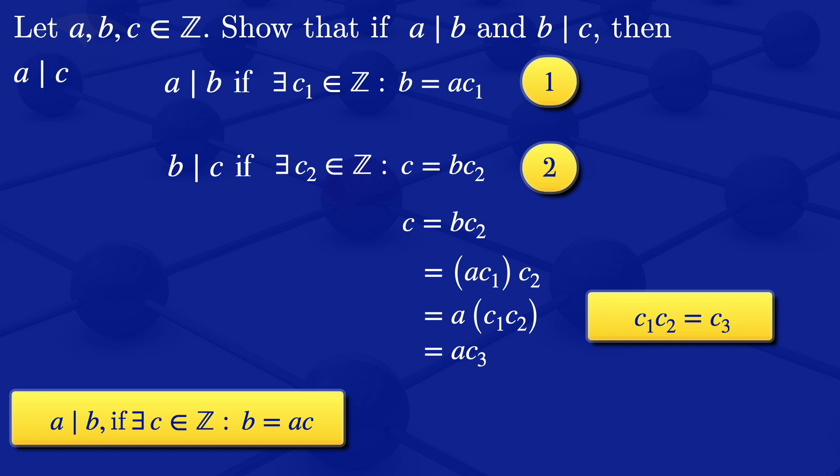So we have C is equal to AC3 where C3 is an integer. But this by definition means that A divides C.